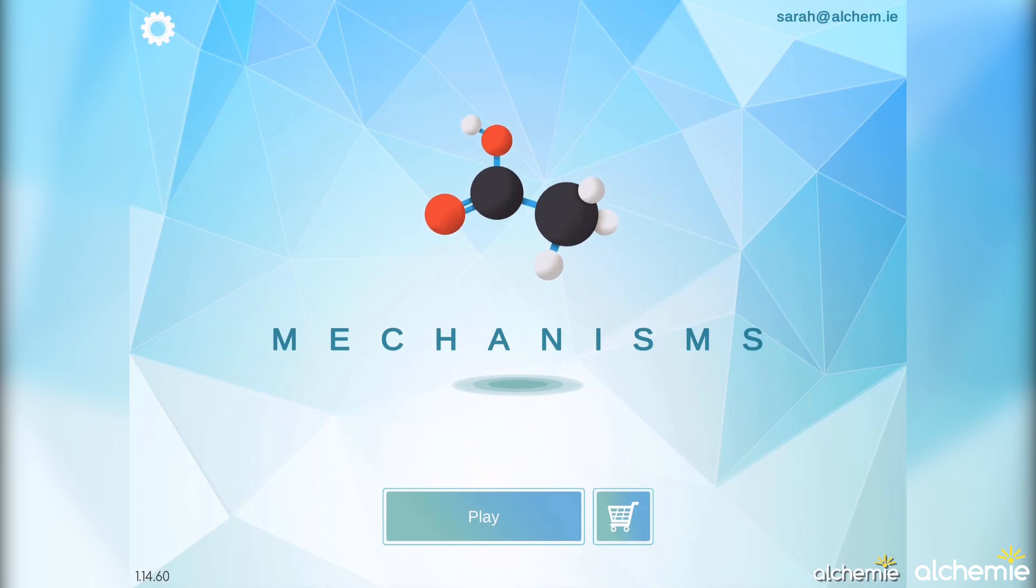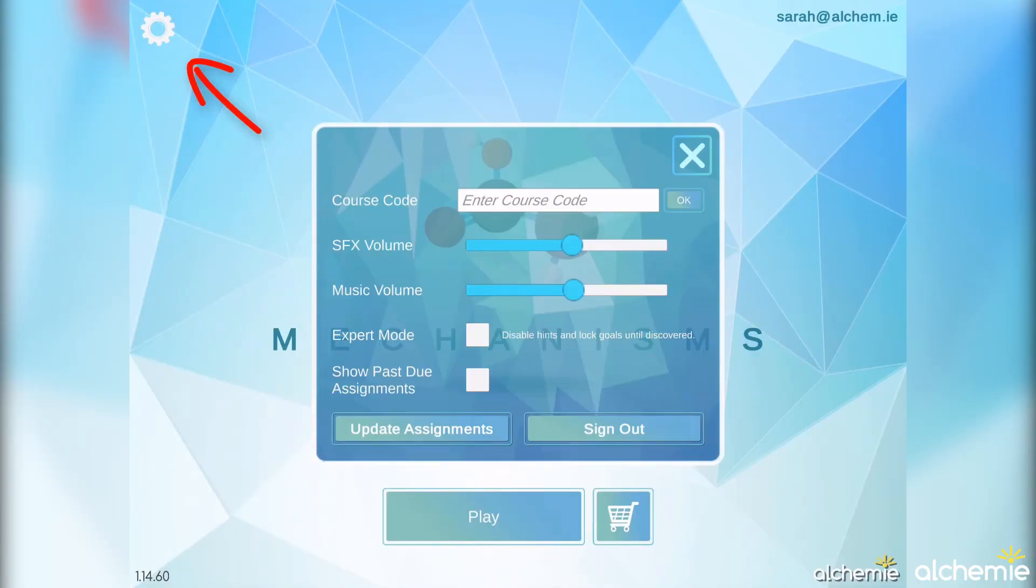Now, let's say you want to study for an exam. If you go back to the home page and go to the settings wheel up in the upper left-hand corner, you can check the box for expert mode. This will turn off hints and hide goals until they are achieved.